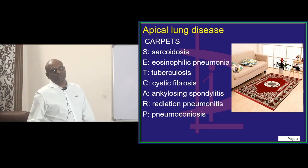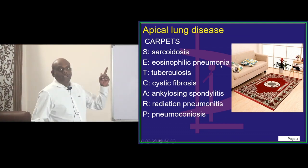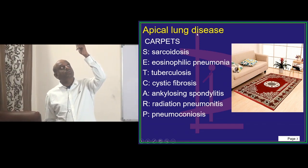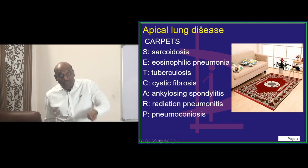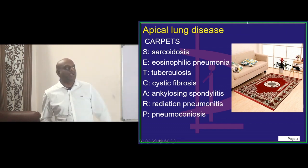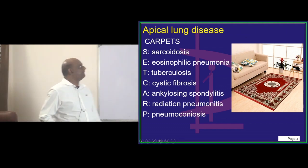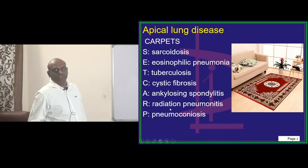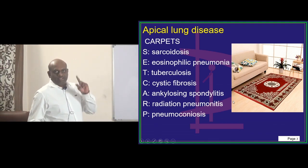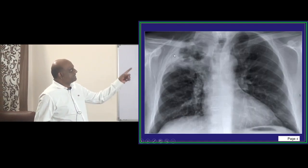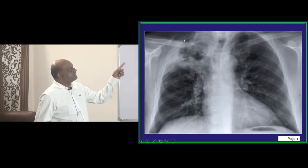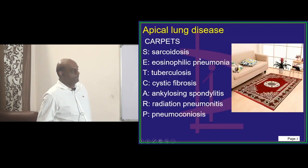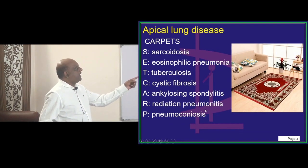CARPETS is a mnemonic you can remember. Apex is the roof — and the opposite of roof is floor, and what is on the floor? Carpets. So CARPETS: C is cystic fibrosis, A is ankylosing spondylitis — both lead to apical lung disease. This is how an apical lung disease looks, involving the apical lobe.